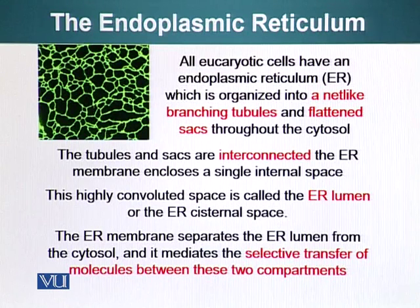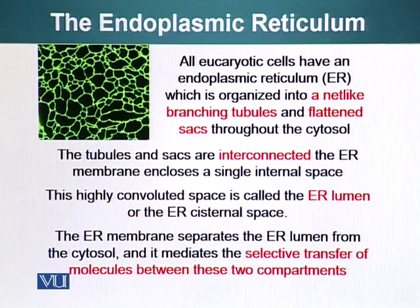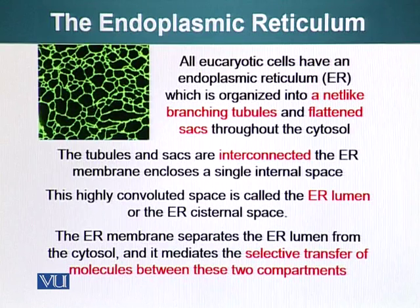What you are looking at here is an immunofluorescence micrograph highlighting the network of endoplasmic reticulum in the cell. The tubules and sacs are interconnected, so the entire endoplasmic space — the lumen — is basically interconnected, forming a labyrinth inside the cell. This highly convoluted space is called the ER lumen or ER cisternal space. The ER membrane separates the ER lumen from the cytosol and mediates selective transfer of molecules between these two compartments.